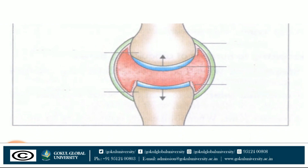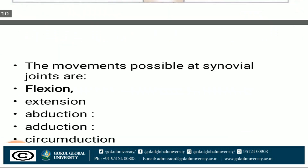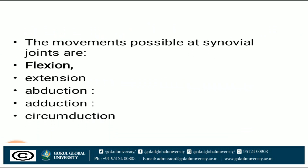The diagram shows the knee joint as an example of diarthrosis. Some joints have movement restricted by ligament attachment. The movements possible at synovial joints are flexion, extension, abduction, adduction, and circumduction.